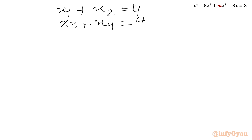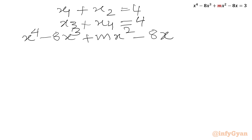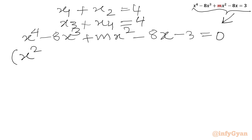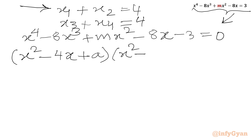Now we will write our equation to one side: x⁴ minus 8x³ plus mx² minus 8x minus 3 equal to 0. We can write the left-hand side as a product of two quadratics. We write (x² minus 4x plus A) for roots x1 and x2, where A is the product x1·x2. Similarly for x3 and x4 we write (x² minus 4x plus B) equal to 0, where B equals x3·x4.